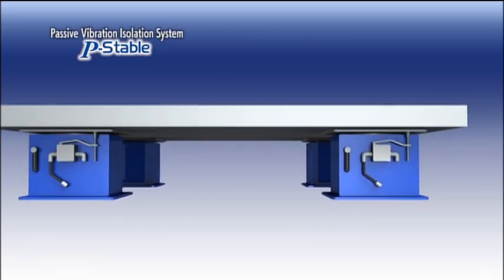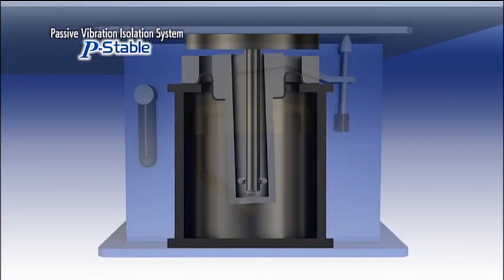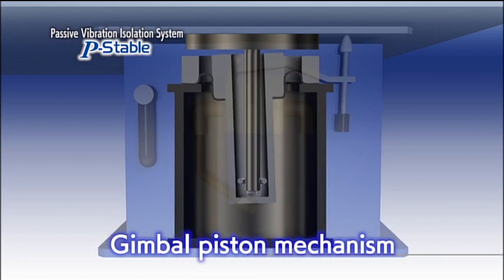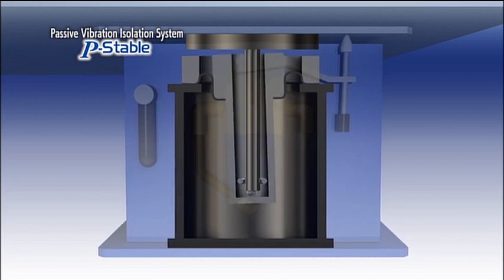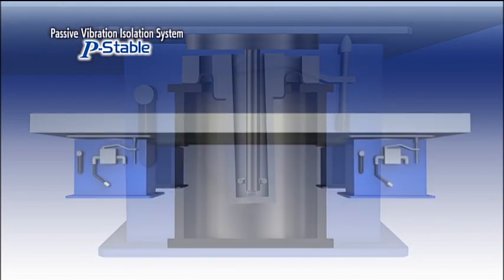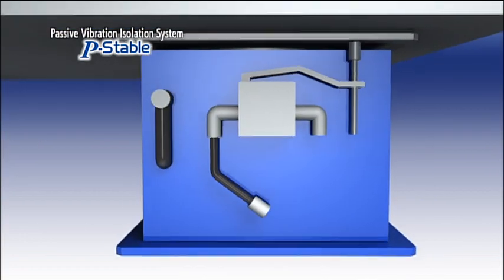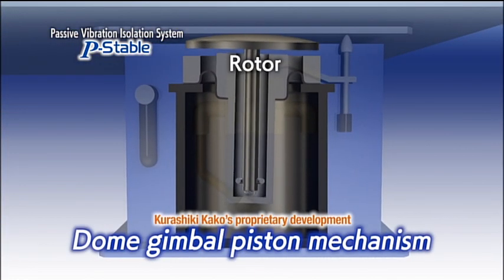Kurashiki Kako's passive vibration isolation system e-stable is noted for its gimbal piston mechanism air spring. A gimbal piston mechanism is an air spring with a gimbal mechanism assembled inside. The gimbal piston is a very compact mechanism with excellent vibration isolation in the horizontal direction and has a reputation for being the best mechanism for a passive vibration isolator. However, at Kurashiki Kako, we have added a rotor to this mechanism, creating the dome gimbal piston with even higher horizontal vibration isolation.